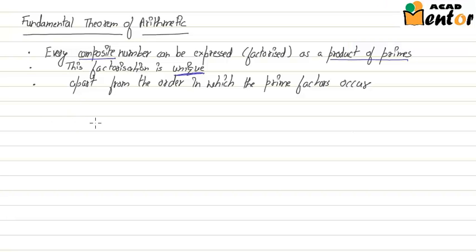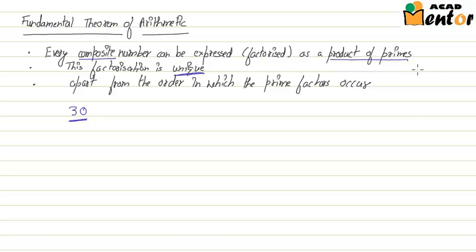In order to explain it better, let's look at a number. Let's suppose that number is 30. First of all, 30 is a composite number — it can be expressed as a product of primes. Let's see how we do that, so let's factorize 30.